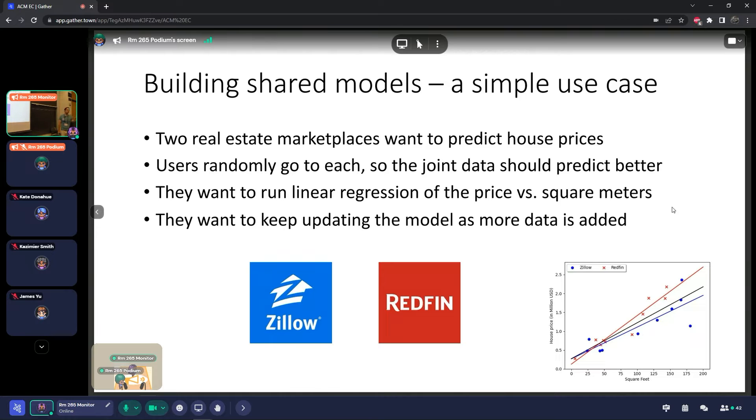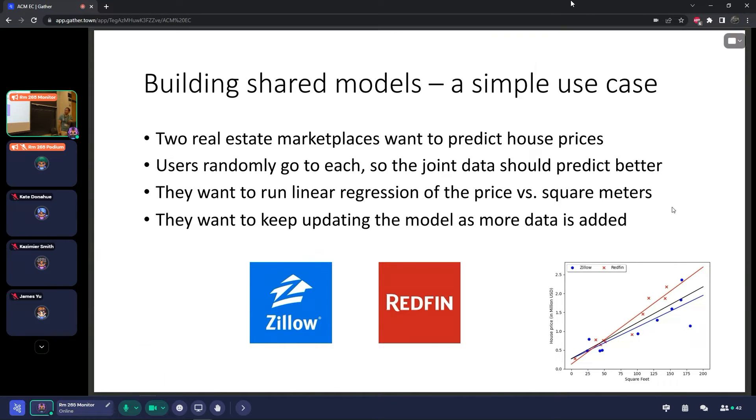The way they would do that is each of them has some historical data points. And they can fit maybe a regression model to see the size of the house against the price. They can do it separately, each on their own data points, or they can share it with some third party or central authority and build the regression model based on all the data together.